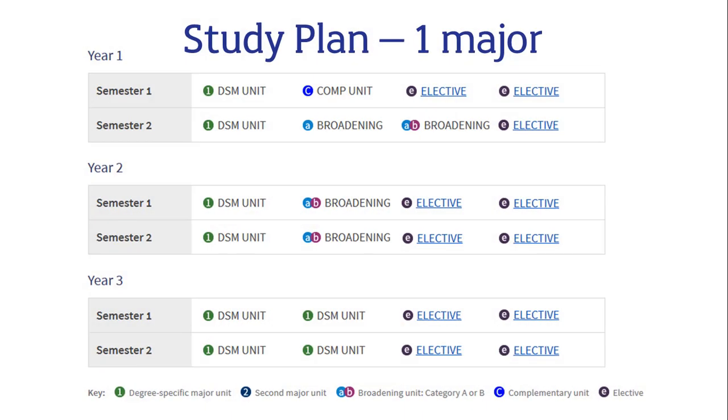Let's look at some examples. This study plan shows a standard full-time enrollment over three years. In this example, the student is taking a single degree-specific major, shown in green. There is also one complementary unit that must be taken with their degree-specific major. This is shown in dark blue. After including four broadening units, shown in light blue, this student will have room for 11 electives to make up the 24 units required for the degree.